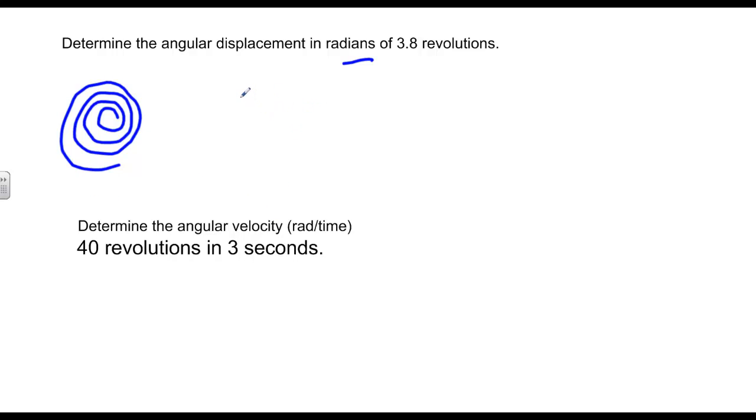I do kind of a dimensional analysis here. If I have 3.8 revs, I know that one revolution is equal to 2 pi radians. Again, I can do a little bit of multiplication on this to get an answer. And what I'll get is either 7.6 pi radians, or if I multiply the pi times the 7.6, I'll end up with approximately 23.88 radians.